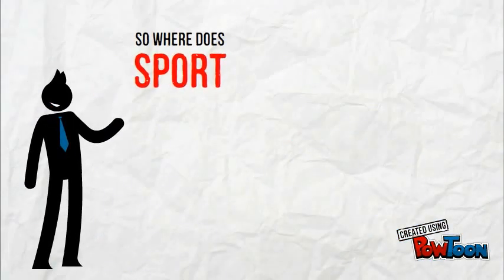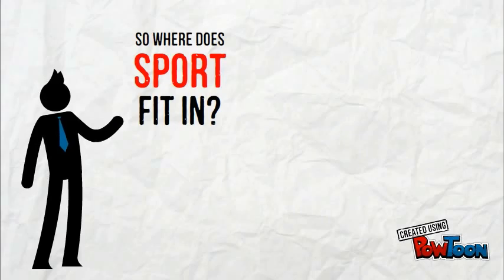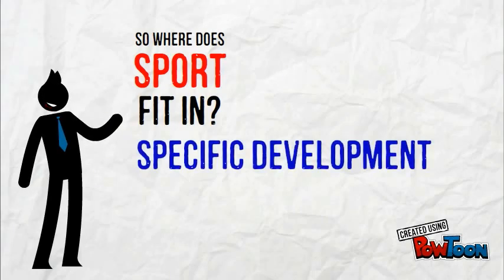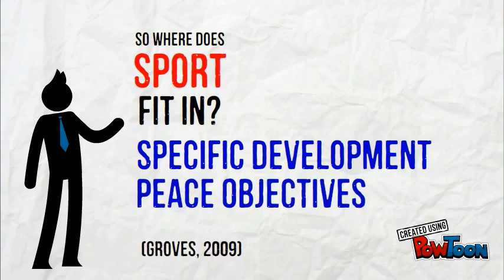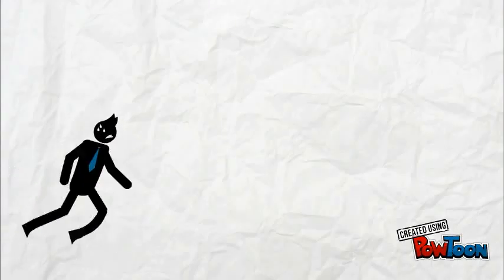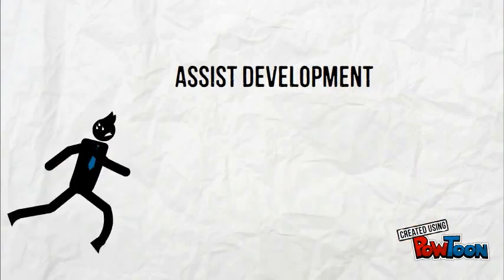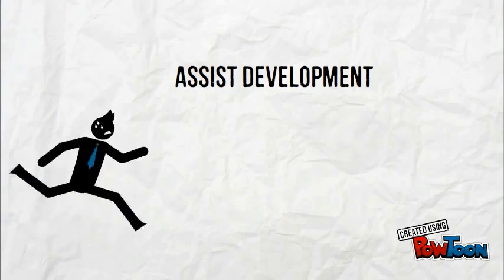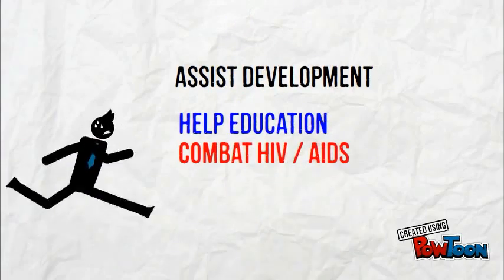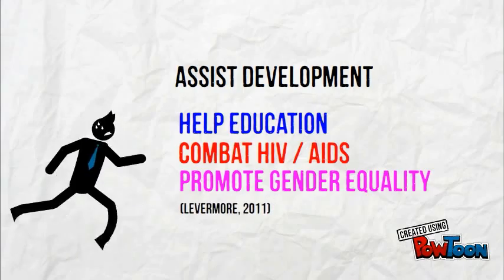So where does sport fit in? Well, sport for development refers to the international use of sport and physical activity to attain specific development and peace objectives. Sport can be used as a platform to assist development. For example, it can help education, combat diseases such as HIV and AIDS, and promote gender equality.